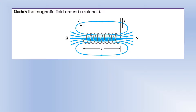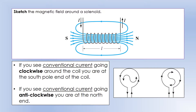On the diagram you can see we've marked north and south poles. To identify which direction those are depends on what you see conventional current doing. If you imagine looking at the coil from the left-hand end as a cross-section, you would see the current going round in a clockwise direction, which tells you it's a south pole. Whereas if you look from the north pole end, you'd see the current going anti-clockwise. That's how we figure out which pole is where.